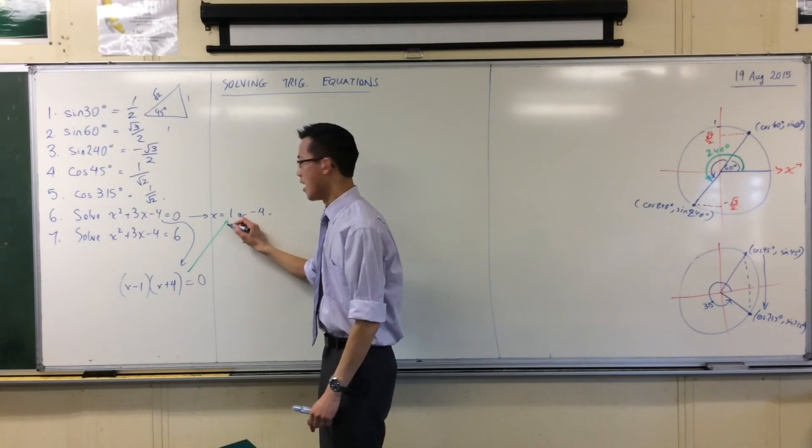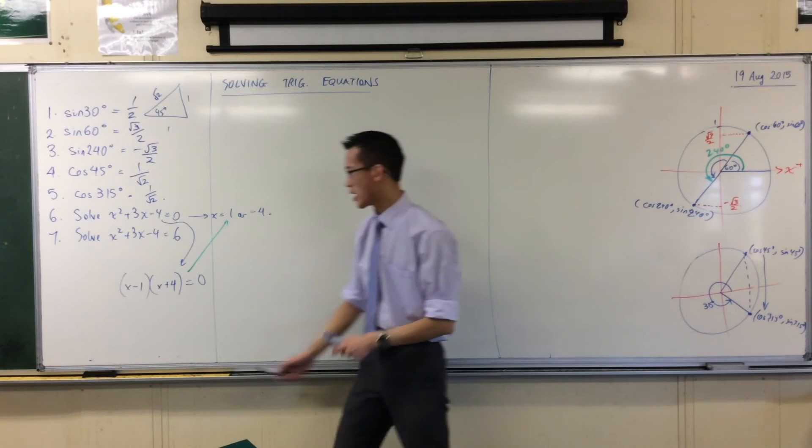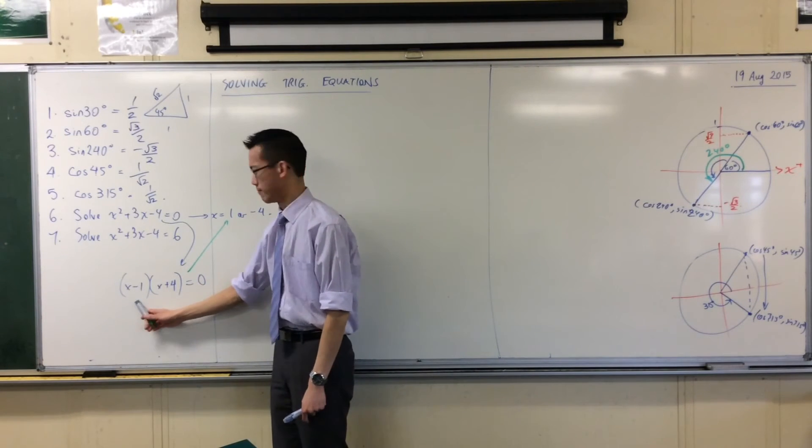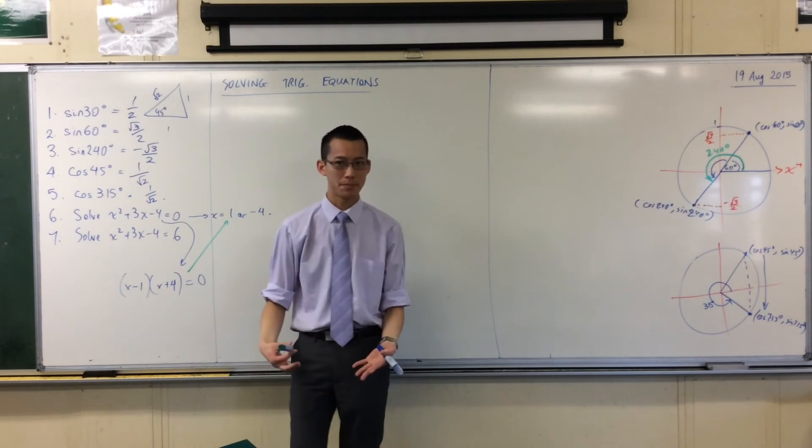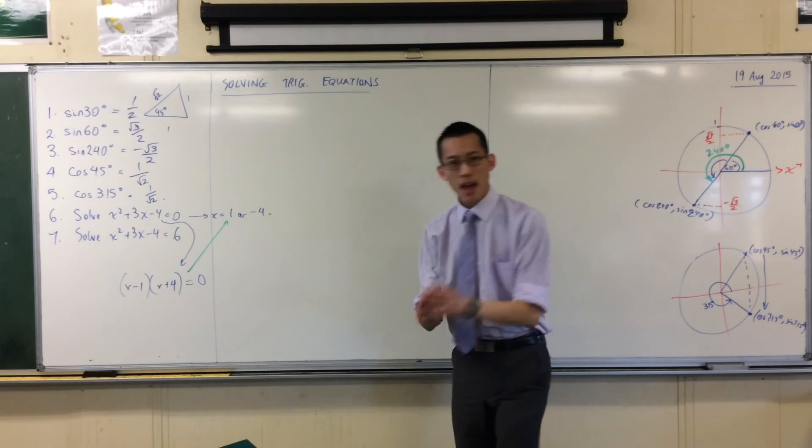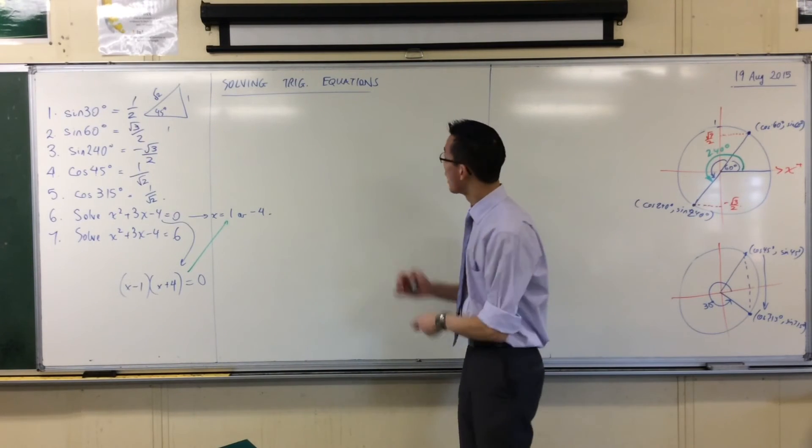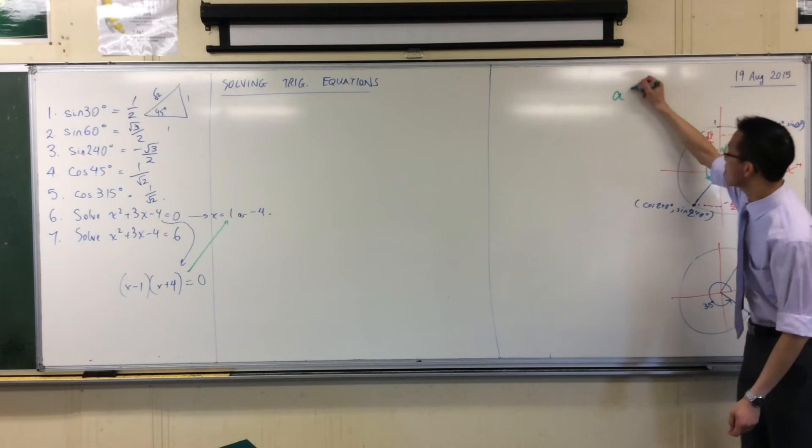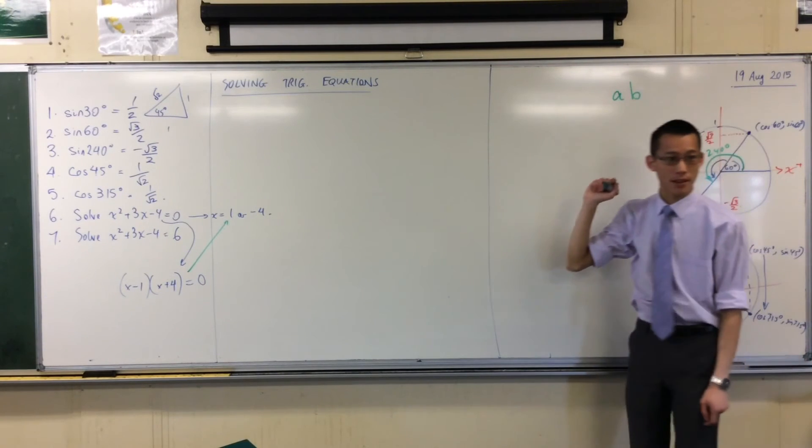How did I get from here up to here? Why is it that when I have x minus 1, the answer is not minus 1? Let me try and explain. If I tell you, I have a pair of numbers, a and b.